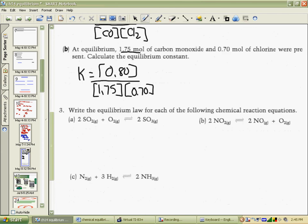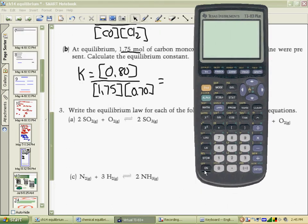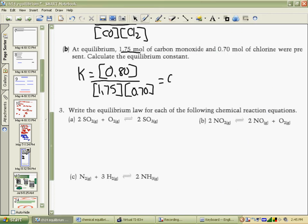So we will bring up our trusty calculator and ascertain 0.8 divided by 1.75 times 0.7 gives us 0.653 as our answer. So we will leave K unitless because it can be a number of different units, moles per liter, 1 over moles per liter, etc., as we go.